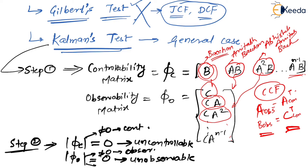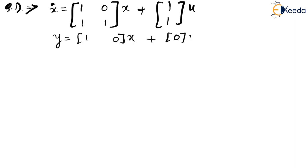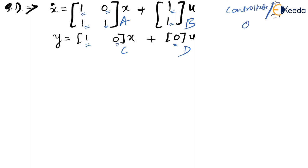So this is the Kalman's test to find controllability and observability. Now let us solve one numerical on it. So, X-dot = [1 0; 1 1]·X + [1; 1]·U, Y = [1 0]·X + [0]·U. This is your A matrix, B matrix, C matrix, and D matrix. We need to check whether it is controllable or not, and observable or not.